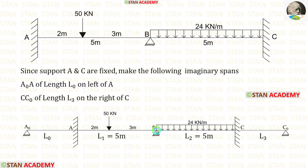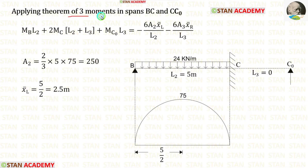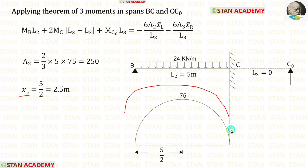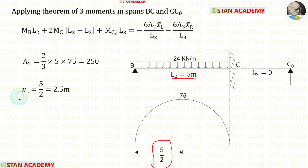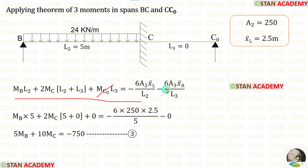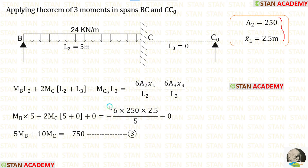Now let us take spans BC and CC0 and make the third equation. Let us apply the theorem of three moments in spans BC and CC0. Area 2 we have already calculated. Let us calculate x-bar left. We know that it is a symmetrical diagram, so the centroid lies in the center. When we divide the length by 2, we get x-bar left equal to 2.5 meters. The terms for the imaginary span will be 0. L2 is equal to 5 meters and L3 is equal to 0. Finally, we are making the third equation.